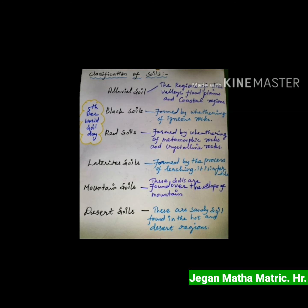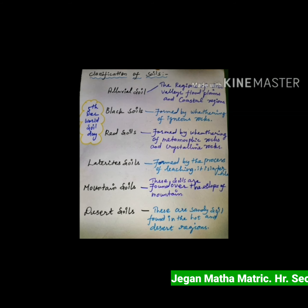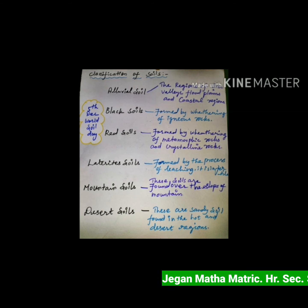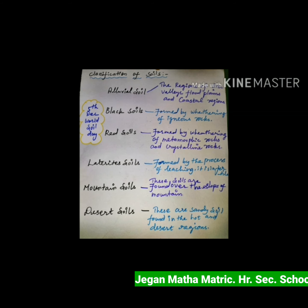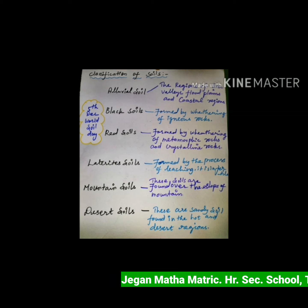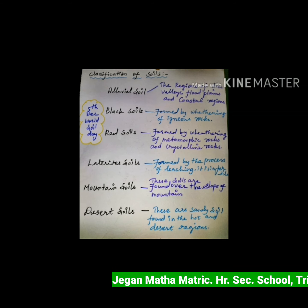Red soils: these soils are formed by weathering of metamorphic rocks and crystalline rocks. It is usually found in semi-arid regions. This soil is brown to red in color. It is not a fertile soil and is suitable for millet cultivation.